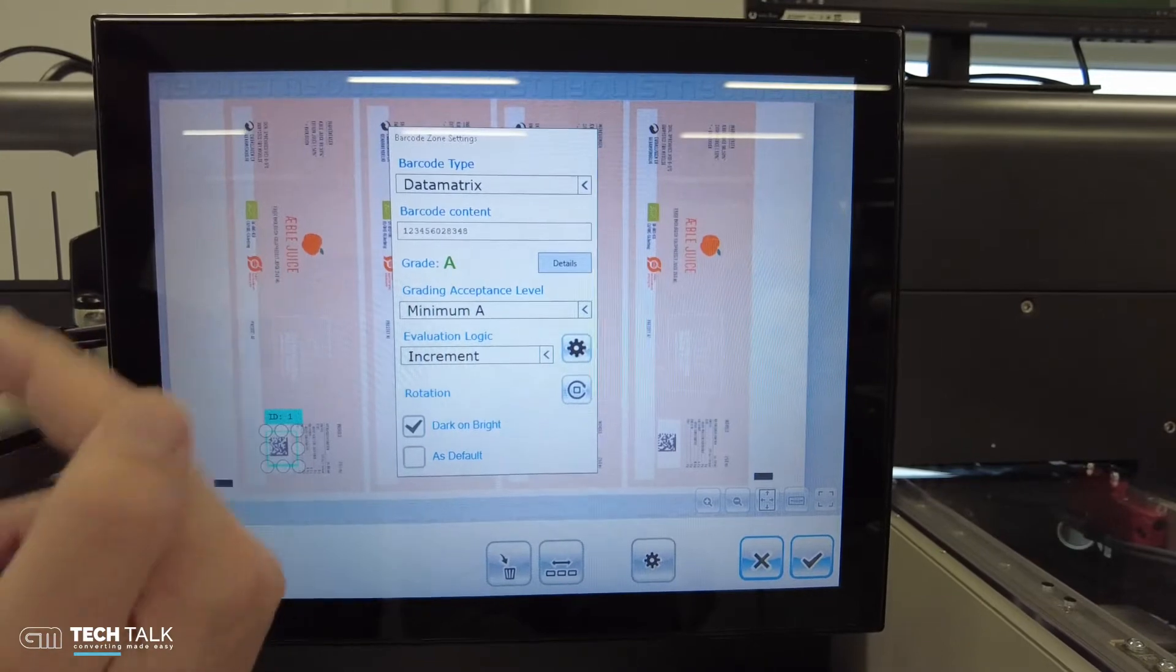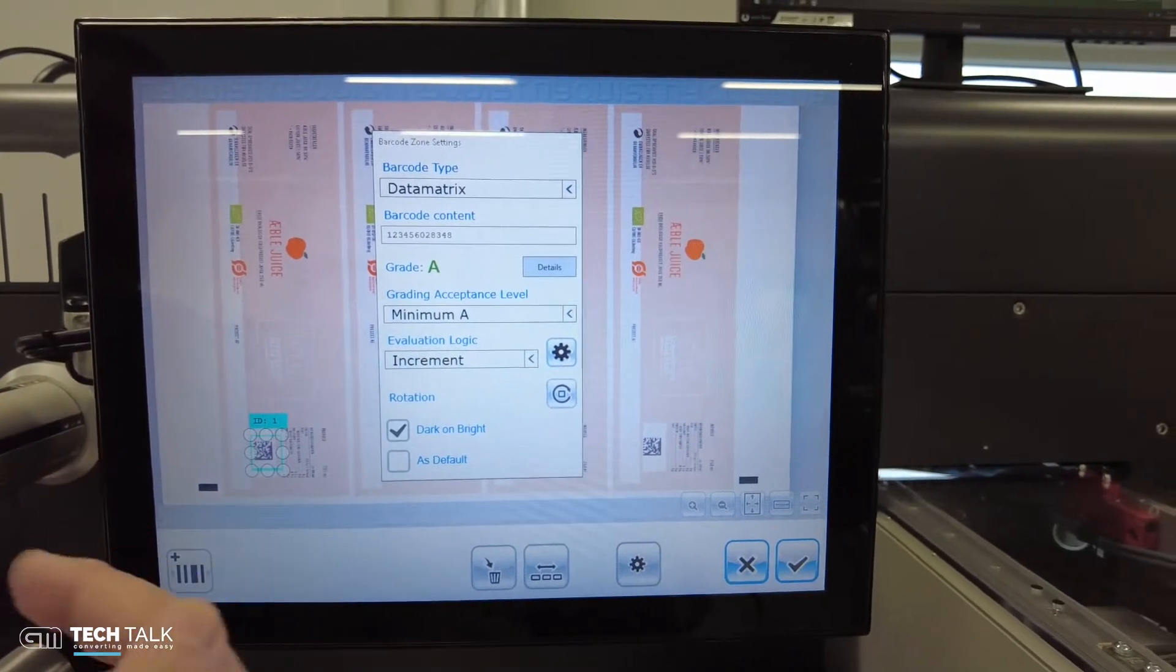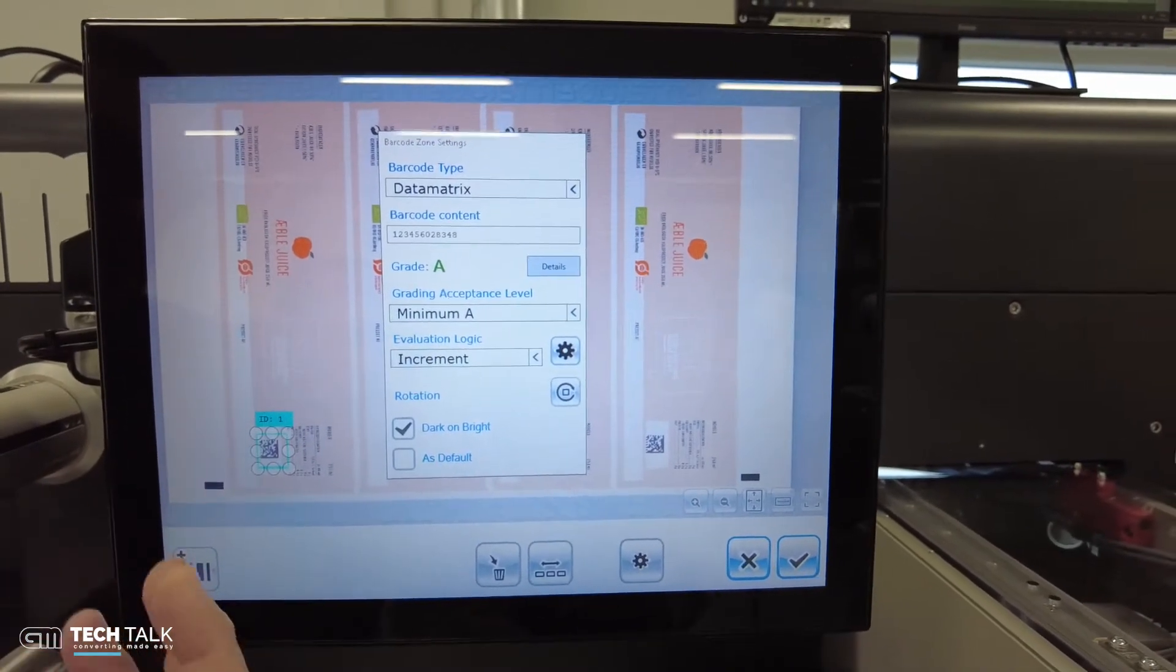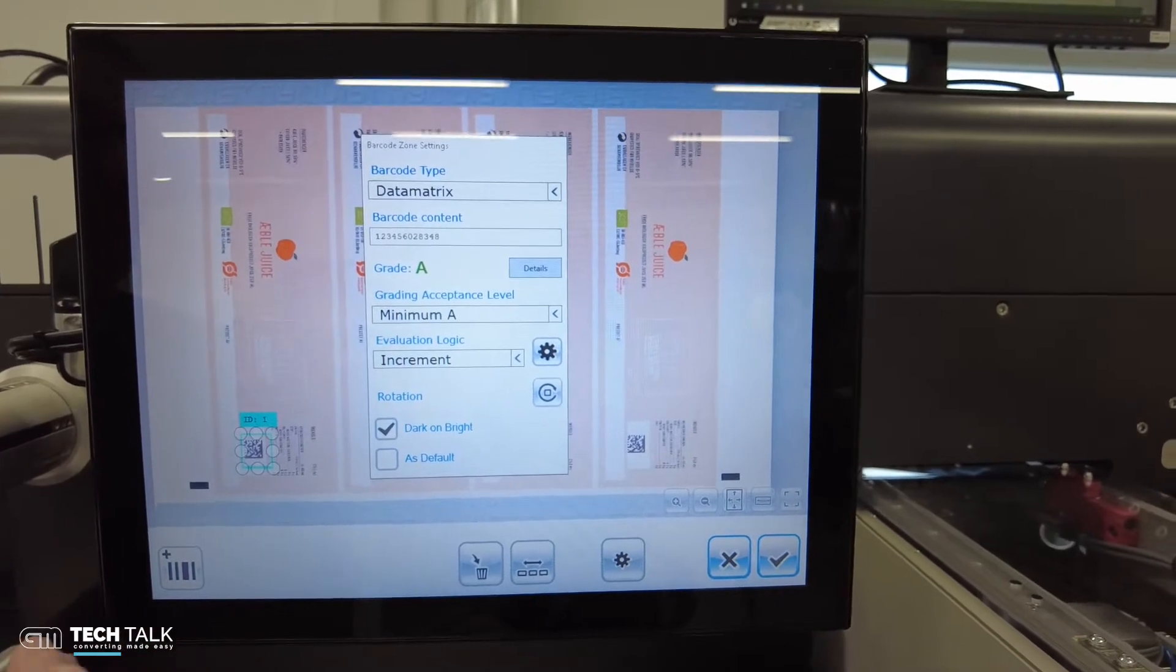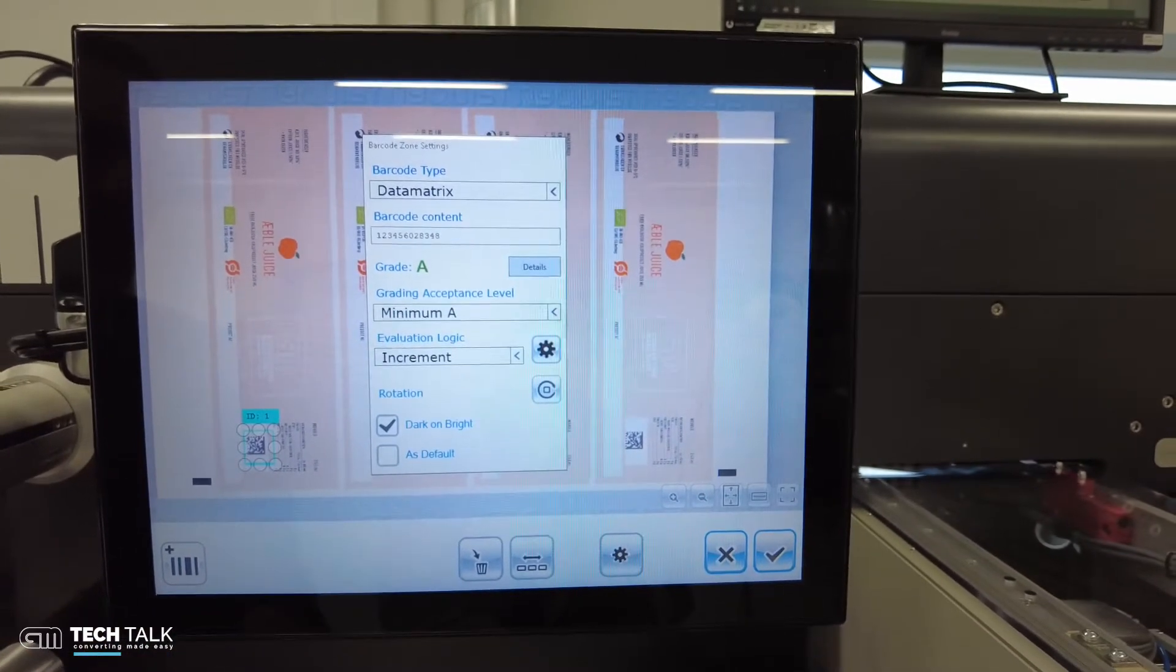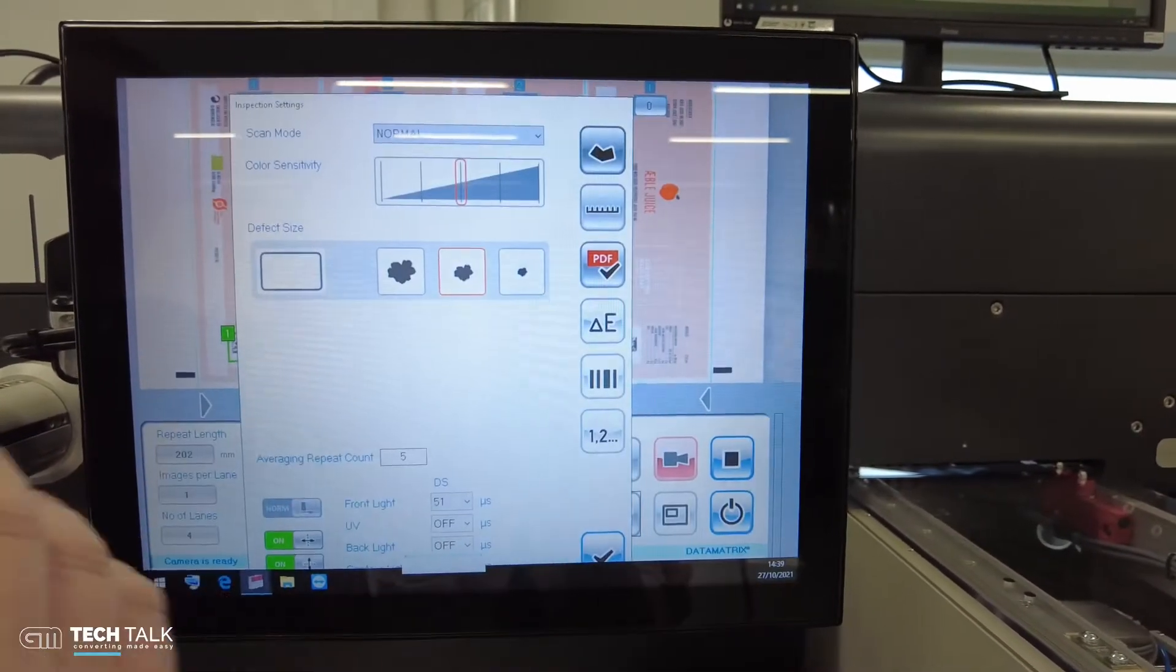In this case we will select incremental, and so the system will automatically check if the code is really increasing in its figures. So we are done.